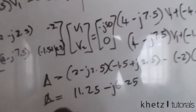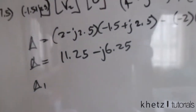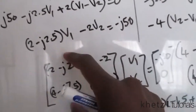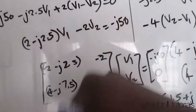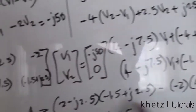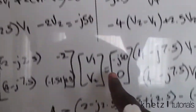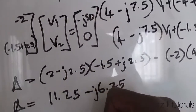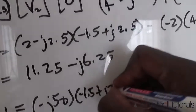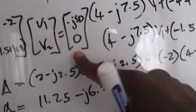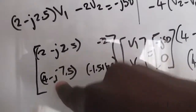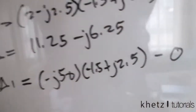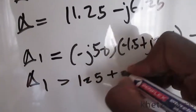For determinant Δ1 to find V1, replace the first column with the right-hand side vector [−j50, 0]. We compute (−j50)(−1.5 + j2.5) minus zero times the other entry, giving Δ1 = 125 + j75.